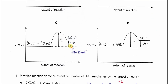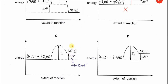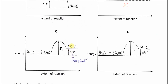How about C? For C, the EA is correct — it's endothermic, so EA is from the reactant to the peak maximum. The delta H is pointing up, which means endothermic, and this represents positive 90 kJ as mentioned in the question. Therefore, the answer must be C. D is wrong because pointing down means exothermic. That's all, thank you.